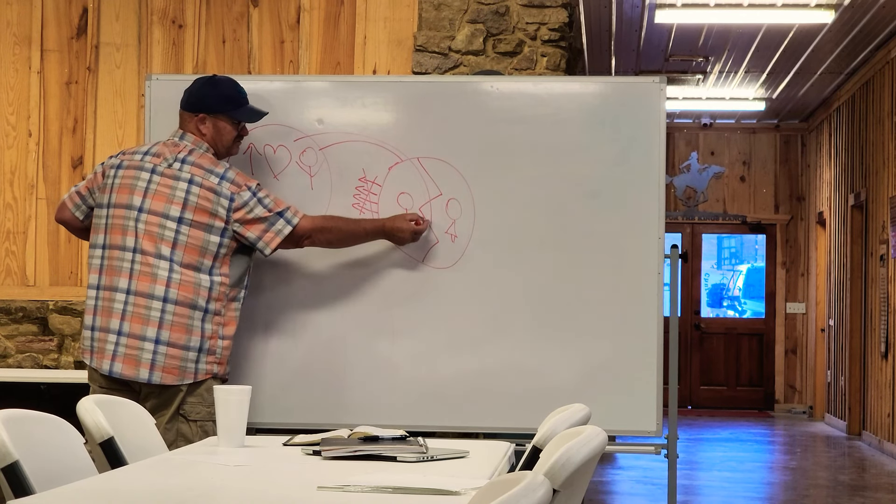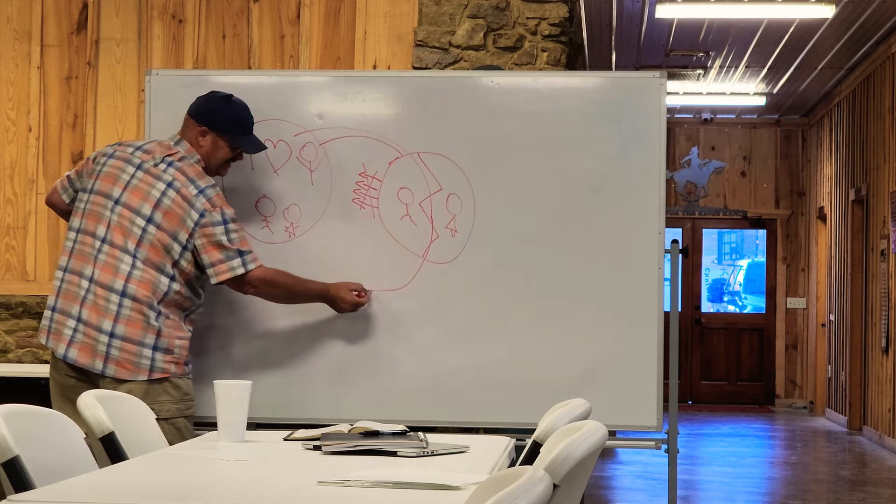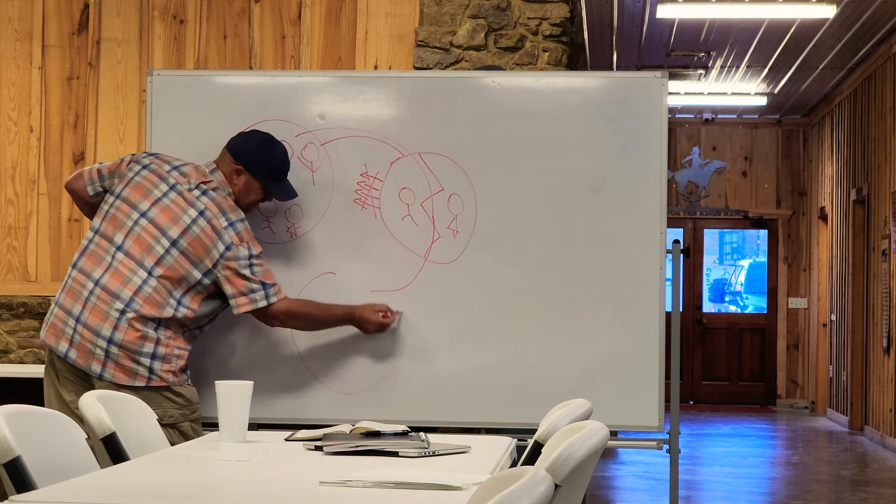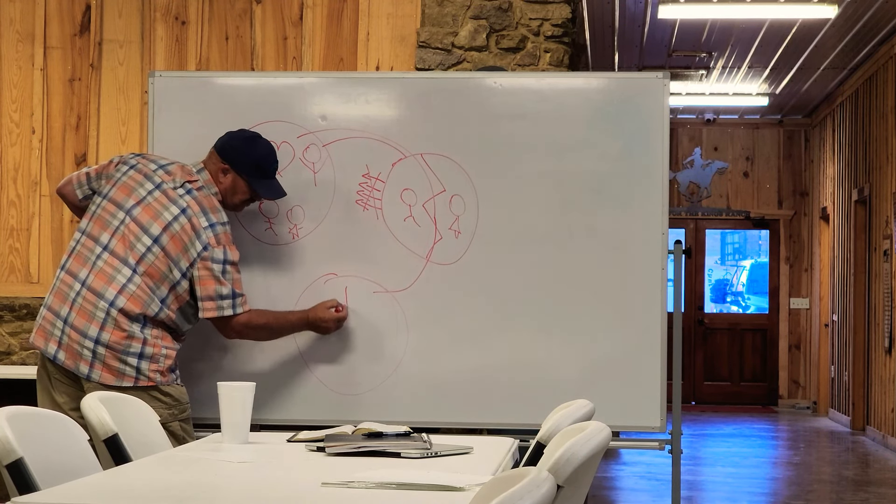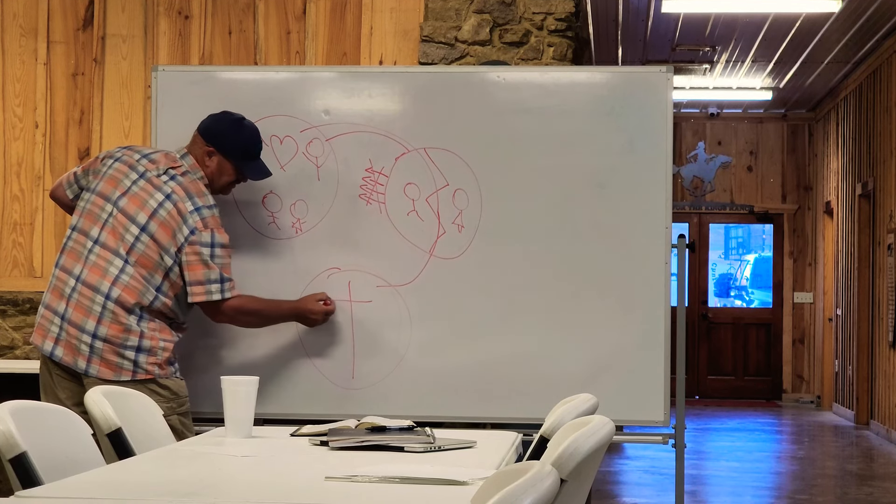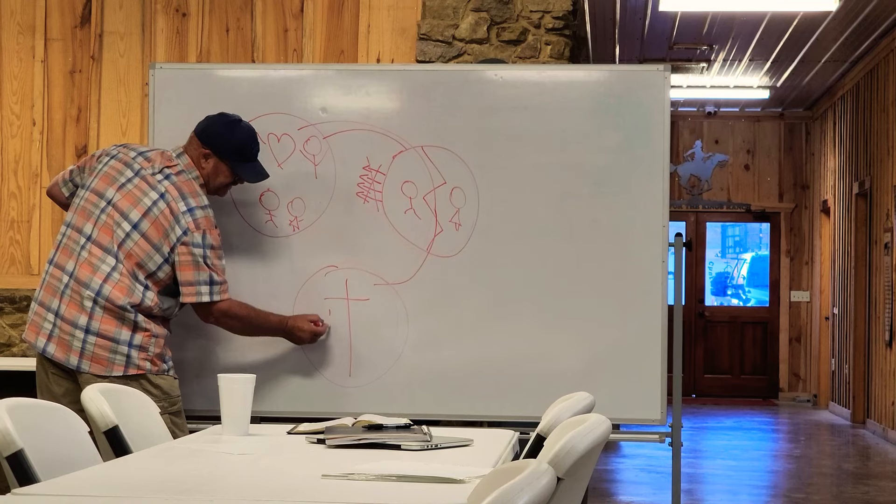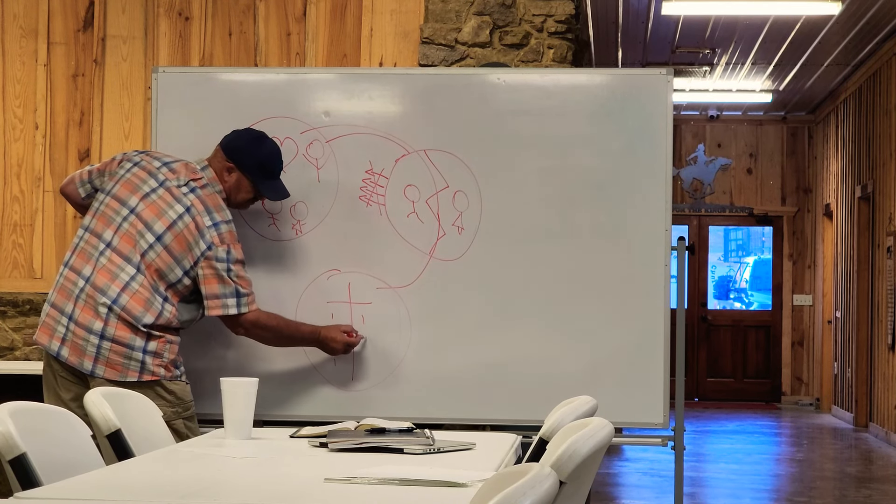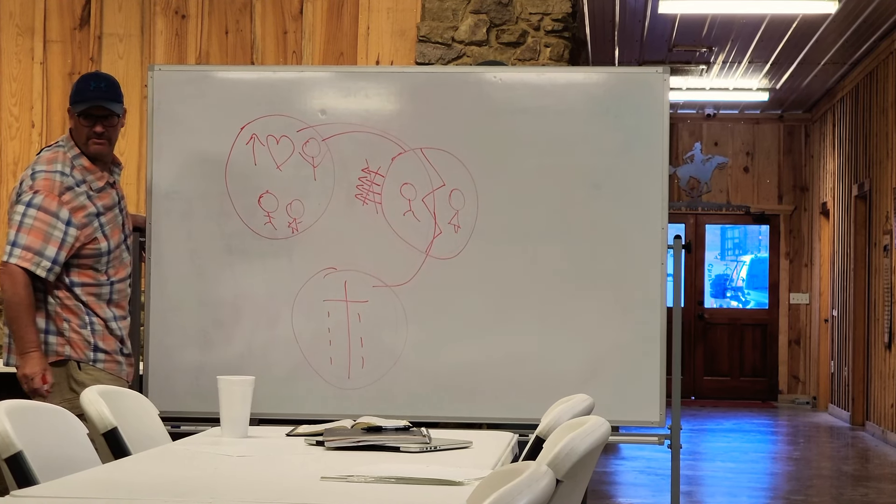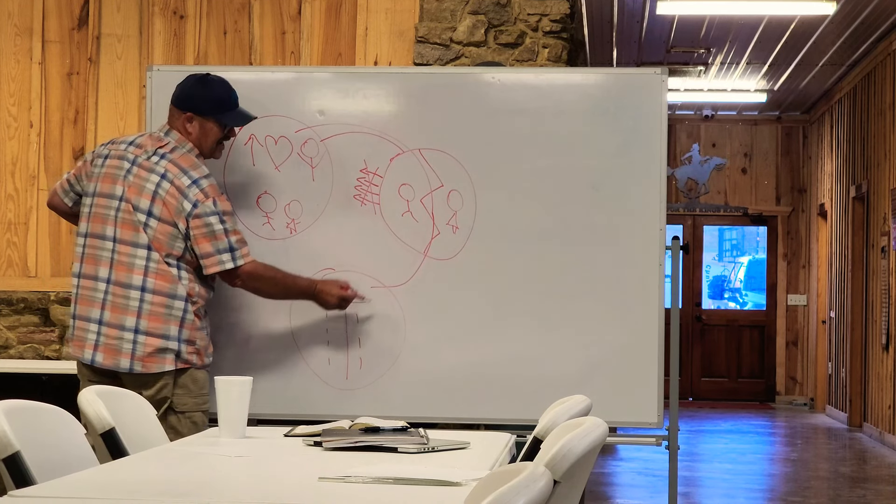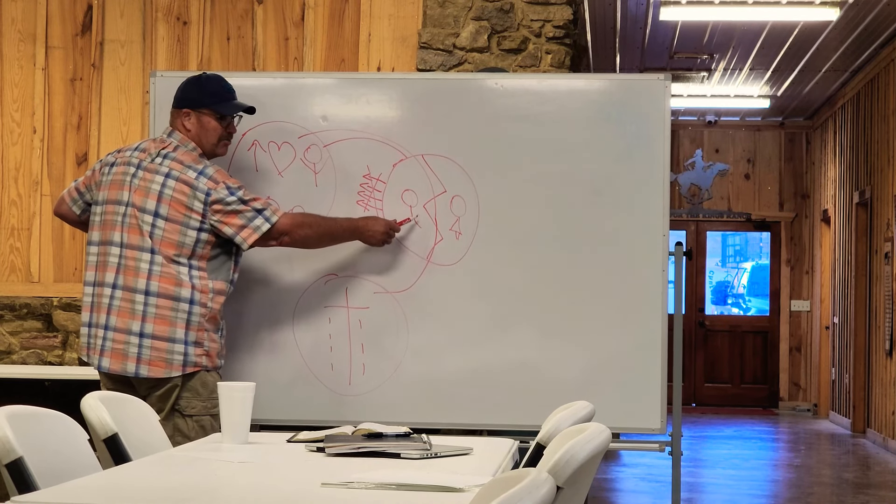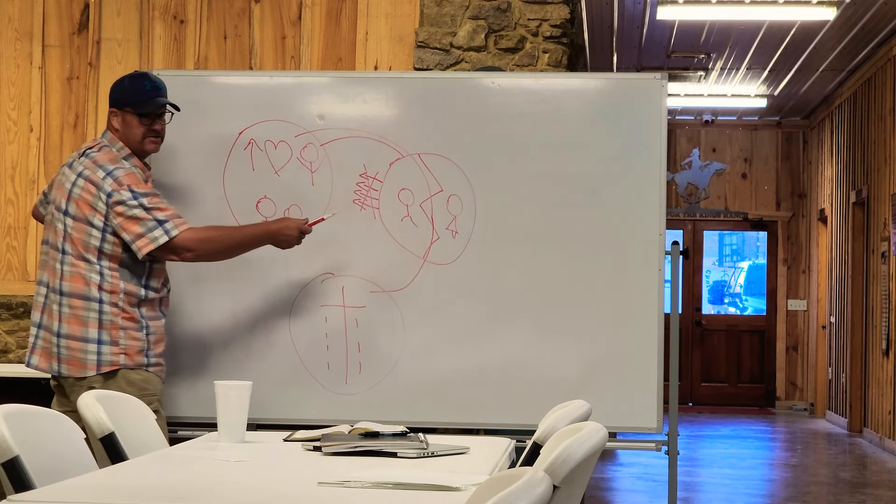But God so loved the world that He gave... What's His name? Jesus. Jesus lived what kind of life? At the end of His life, He was crucified on a cross. And His blood paid for our brokenness and the world's brokenness.